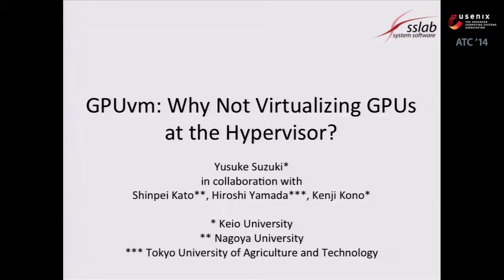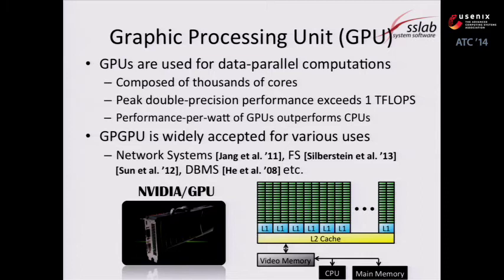Recently, GPUs are used not only for graphics but also for massively data-parallel computations. GPU is composed of thousands of cores. It is highly energy efficient and its peak performance exceeds one teraflops. So GPGPU is now widely accepted for various use cases such as network systems, file systems, DBMS systems, and so on.